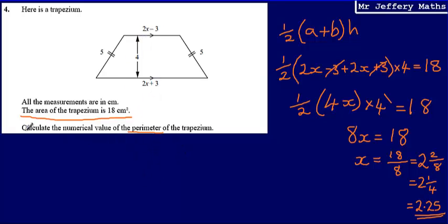Now I'm going to calculate the numerical value of the perimeter of the trapezium. Now I know that x is equal to 2.25. Well, now I can substitute that value in, and that will tell me what the actual lengths of those two parallel sides are.